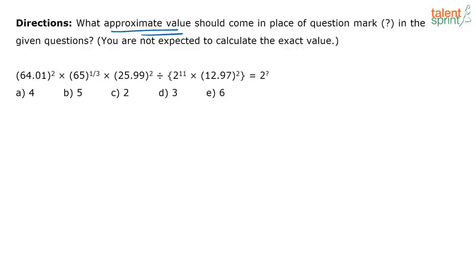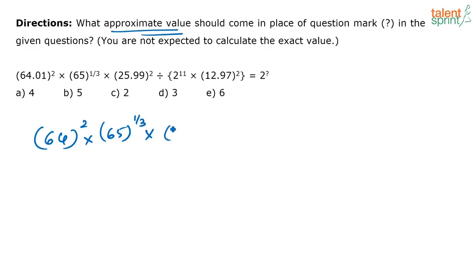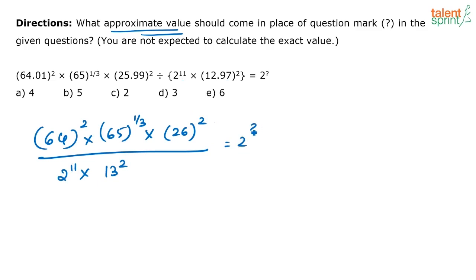Remember, here you have to find only the approximate values, and the values are given in such a way that you can very easily approximate and arrive at the answer. What is given here: 64.01 squared into all of these values is equal to 2 to the power of what? I can approximate and write it as 64 squared into 65 to the power 1 by 3 into 25.99, which you can take as 26 squared, divided by 2 to the power 11 into 12.97, again written as 13 squared, equal to 2 to the power question mark. If you write it like this it becomes much more easier to decipher.